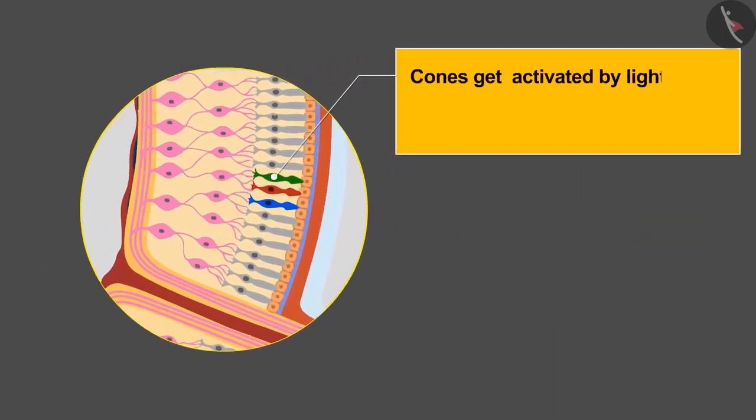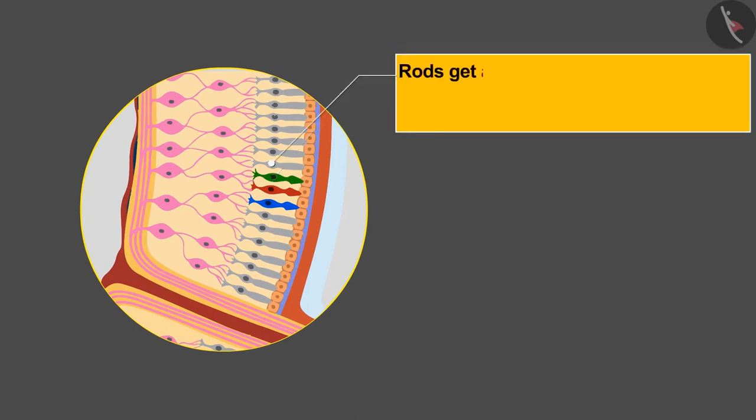Cones get activated by the light, due to which we are able to see different colors. And rods get active in low light, due to which we see all objects in black or white.